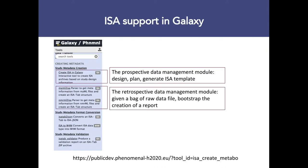You can also work retrospectively. For instance, if you have a bag of mzML files or nmrML files, you can invoke two tools available from the Galaxy Phenomenal environment — the mzML-to-ISA and the nmrML-to-ISA — which will create a backbone of the ISA document you can really use as a bootstrap for creating the report. You will still need to provide information about the overall patient or sample information, as this may not be found in the actual data files.